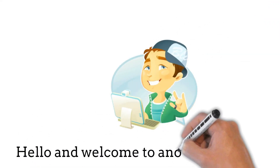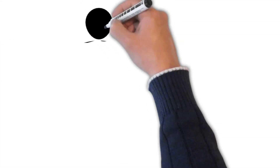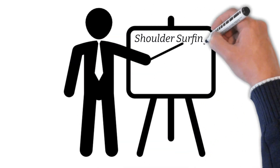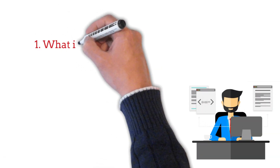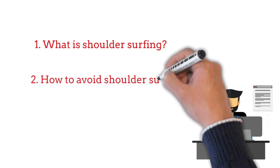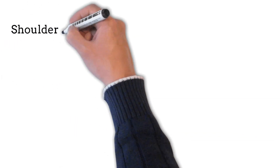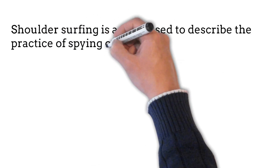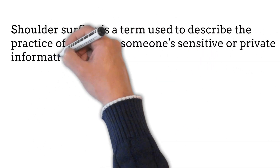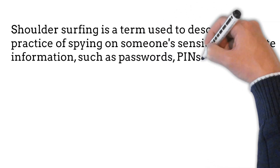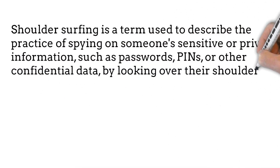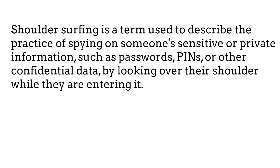Hello and welcome to this channel. In this video we will discuss shoulder surfing. Shoulder surfing is a term used to describe the practice of spying on someone to obtain sensitive or private information, such as passwords, PINs, or other confidential data, by looking over their shoulder while they are entering it.